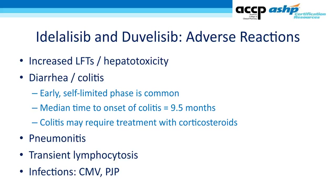The PI3K inhibitors — idelalisib and duvelisib — appear to have the most severe adverse effects of any agents discussed. They seem to cause an autoimmune response resembling graft-versus-host disease, with LFT elevations and hepatotoxicity, diarrhea or severe colitis (including an early self-limited phase and a second peak around nine months that may require corticosteroids), and pneumonitis. There is also a rising incidence of opportunistic infections in this drug class, so CMV surveillance and pneumocystis prophylaxis are recommended.